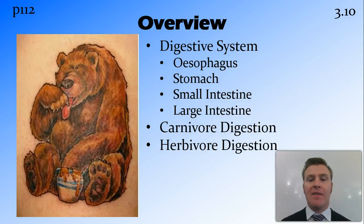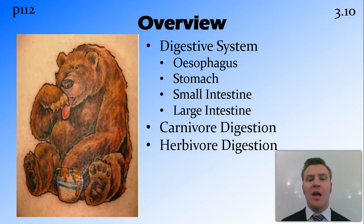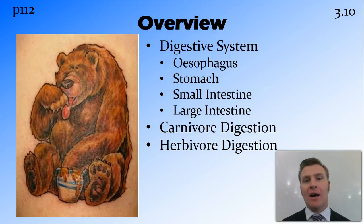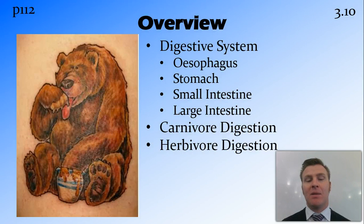We've then compared that to carnivore digestion, which has basically the same parts but the small intestine and large intestine or colon are much shorter. And herbivore digestion, which could either be foregut or ruminant — where they have symbiotic anaerobic bacteria living before the stomach — or hindgut digestion, where they have symbiotic anaerobic bacteria living after the stomach in the caecum, that first part of the large intestine.